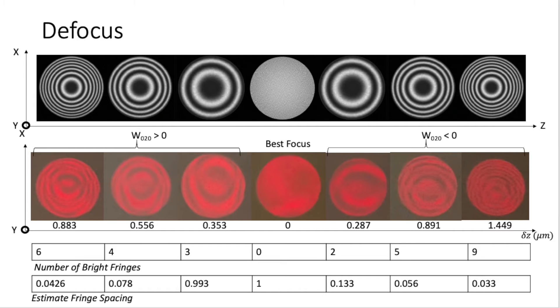In front of the focus, the center fringes are vertically off-centered, and behind the focus, we see this in the opposite direction. This indicates tilt about the y-axis, or x-tilt, in the test surface.